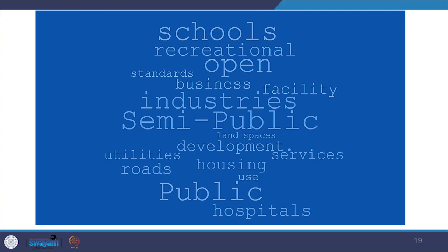Looking at the statutory provisions for the zonal plan of Delhi, the Development Plan Act 1957 under Section 8 provides for preparation of zonal development plans simultaneously with the master plan or as soon as thereafter. Under the Act, a zonal plan may show land use, public and semi-public facilities, utilities and services, roads, housing, recreational areas, industries, business, market, school, hospital, open spaces, standards of population density, and various other components of development.